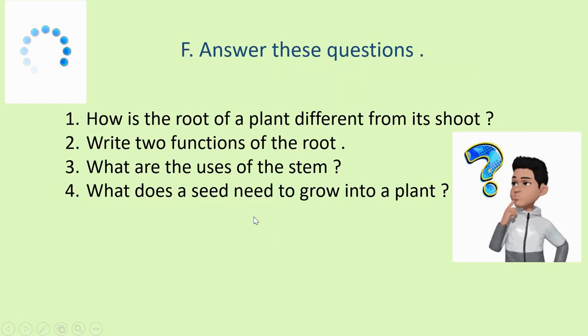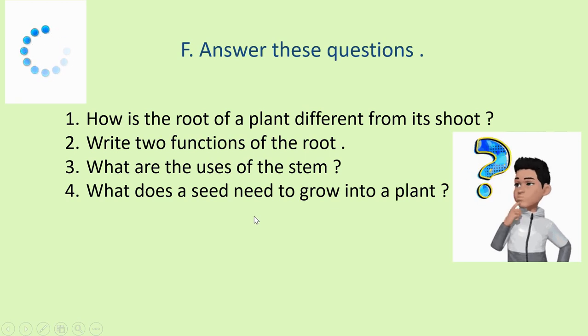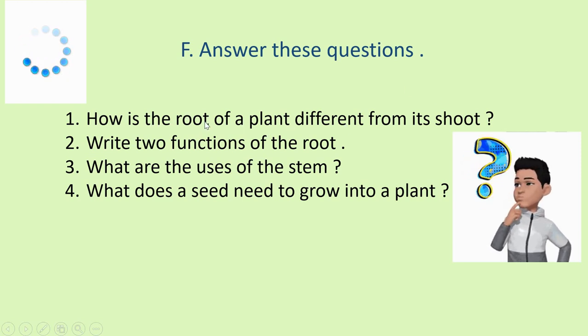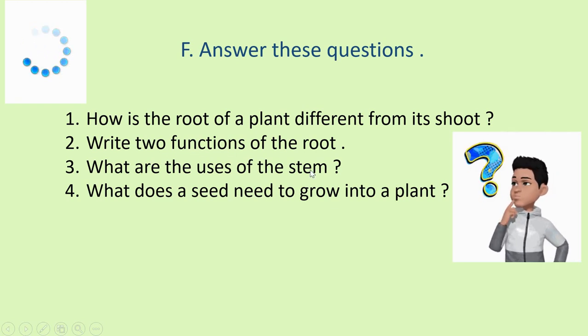Correct? Now, answer these questions. This is the F part in your book. See, the boy is thinking, what are the answer of these? How is the root of a plant different from its shoot? We have to differentiate root and shoot. Second, write two functions of the root. Third, what are the uses of the stem? Number four, what does a seed need to grow into a plant?